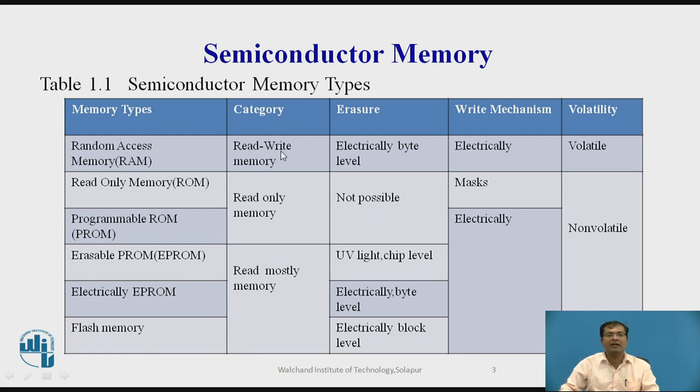Now the category based on Read and Write: RAM allows for Read and Write Memory and ROM, Read Only and other read mostly memory. And the next factor is regarding Erasing. RAM can be erased electrically, byte level. ROM and PROM not possible. And for other remaining three like UV light chip level, electrically byte level, and electrically block level respectively. Regarding writing mechanism, RAM electrically, ROM and remaining electrically. With respect to volatile, RAM is volatile and others are non-volatile.